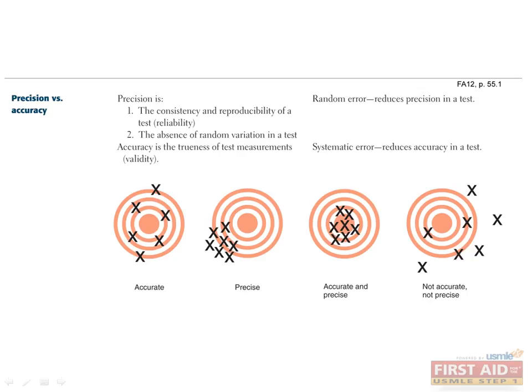A precise test may not be accurate, and an accurate test may not be precise. Let's look at some examples that illustrate this concept. In the first diagram on the left, the data points are widely scattered, but their average is centered on the bullseye, which represents the true value. Thus, this test is accurate but not precise. In the second diagram, the data is tightly clustered but off-center, so the test is precise but not accurate. In the third diagram, the data is tight and centered, so the test is both accurate and precise. Finally, the last diagram shows widely scattered and off-center data corresponding to a test that is neither accurate nor precise.